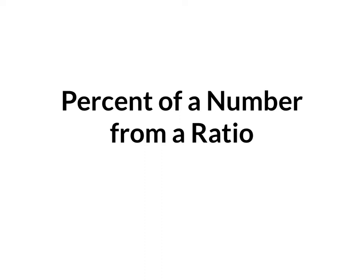Today's lesson is on percent of a number from a ratio. Let's break this down. Percents are ratios to 100. They give us a way to compare comparisons, really. For example, on a quiz, if I got 4 out of 5 correct, that's 80% correct, or 80 out of 100 points, even though there were only 5 questions.